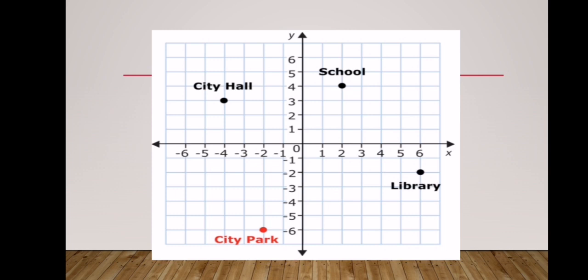Then you move four places vertically upward to reach the school. So the coordinates of the school are going to be (2, 4). We write these coordinates within brackets or parentheses. The first coordinate always represents the position or movement along the x-axis, and the second coordinate, followed by a comma, always represents the vertical position.